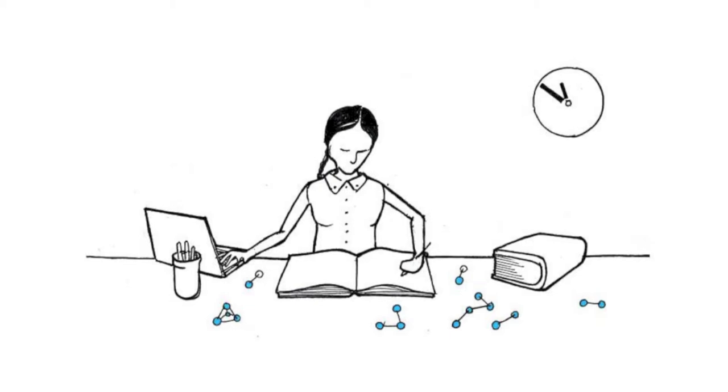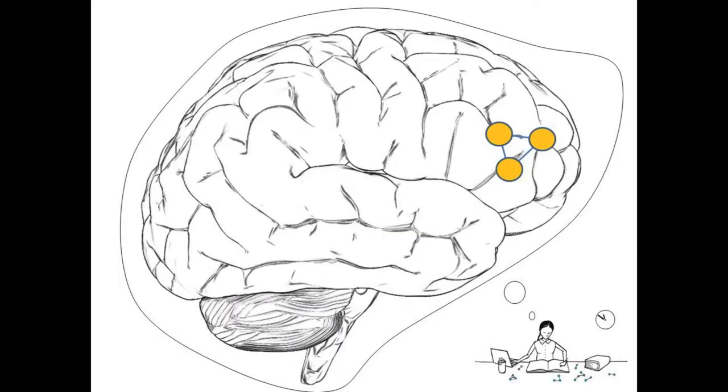When you learn new information or a new motor skill, you will create a network of neurons encoding this information. In our picture here, you can see this network being represented by the three yellow dots. Until now, since the memory is new, the connections between these different modules or neurons are still very weak.